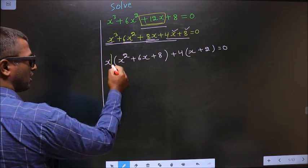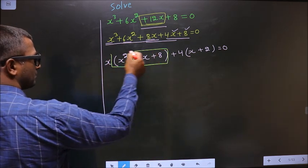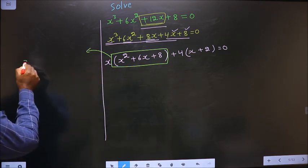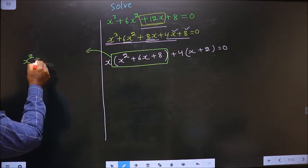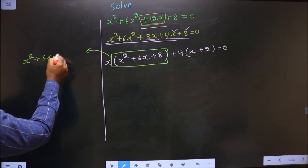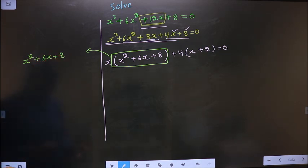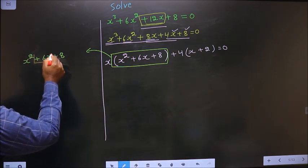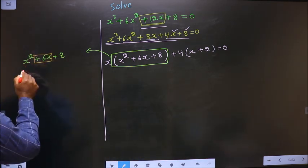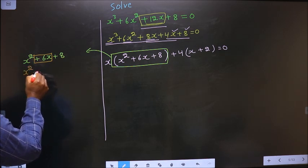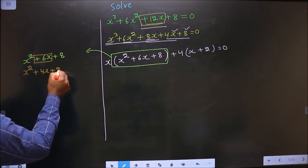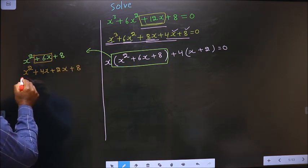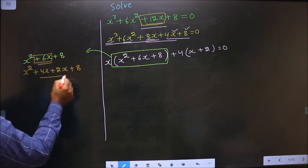This is a quadratic equation. I will factorize this quadratic here, that is x square plus 6x plus 8. To factorize this, I should change the middle term, that is 6x. I change 6x to be 4x plus 2x, plus 8.